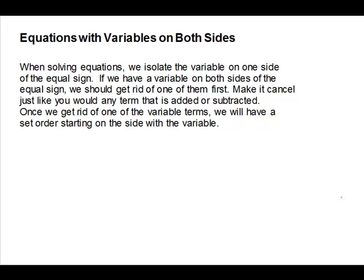Equations with variables on both sides. When solving equations, we isolate the variable on one side of the equal sign. If we have a variable on both sides, we should get rid of one of them. Make it cancel just like you would any other term that is added or subtracted — if it is added you subtract, if it is subtracted you add. Once we get rid of one of the variable terms, we will follow a set order starting on the side with the variable.